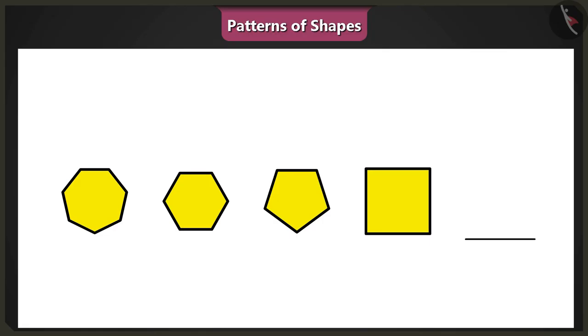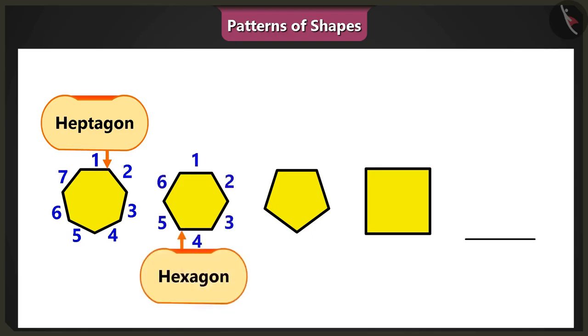For example, look, here is a pattern of shapes. In this pattern, a seven-sided shape, heptagon, is followed by a six-sided shape, hexagon.